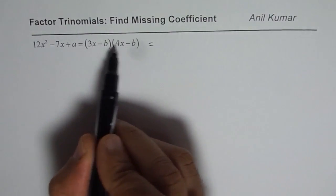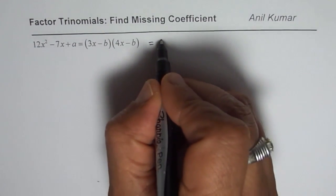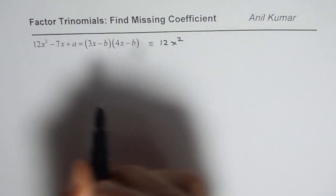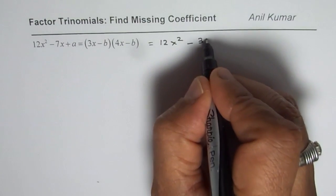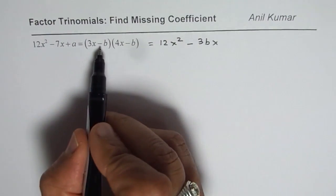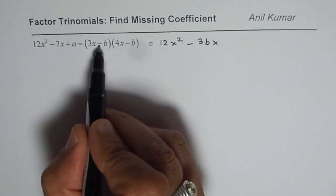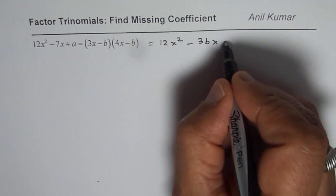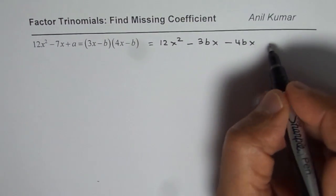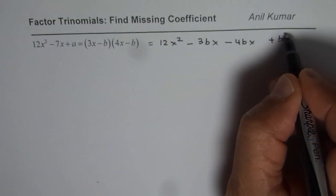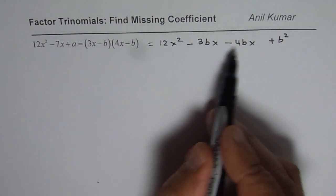When you expand it, you get 3x times 4x which is 12, so you get 12x squared. Now 3x times minus b, so we get minus 3bx. And now we will multiply with minus b. So when you multiply by minus b you get minus 4bx.